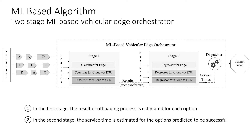Now let me explain our machine learning based workload orchestrator. Similar to our previous work, the clients — in this case the vehicles — offload their tasks of different sizes. Our approach again consists of two stages. In the first stage, we performed a classification algorithm for each option in order to predict the result of the offloading operation. In the second stage, the service time is estimated. As a result of the estimations, we pick the target virtual machine that promises the minimum service time.